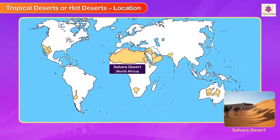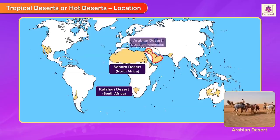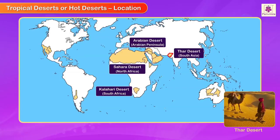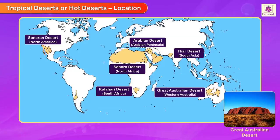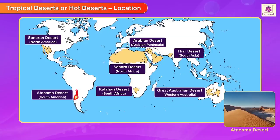Some tropical deserts include the Sahara Desert in North Africa, the Kalahari Desert in South Africa, the Arabian Desert in the Arabian Peninsula, the Thar Desert in South Asia, the Sonoran Desert in North America, the Great Australian Desert in Western Australia, and the Atacama Desert in South America.